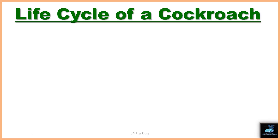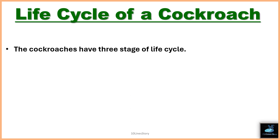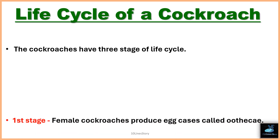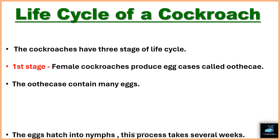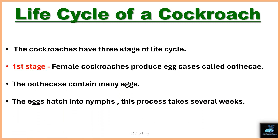Welcome back to the online story channel. Today's topic is the life cycle of a cockroach. Cockroaches have three stages in their life cycle. In the first stage, female cockroaches produce egg cases called oothecae. The oothecae contain many eggs, and the eggs hatch into nymphs.